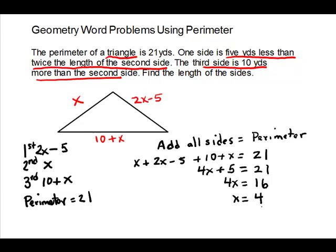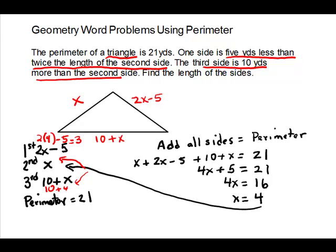Now we substitute back to get the other two sides. For the first side: 2 times 4 minus 5 equals 8 minus 5, which is 3. For the third side: 10 plus 4 gives us 14. So we have one side that is 3, one side that is 4, and one side that is 14. Quick check: 3 plus 4 plus 14 equals 21, which is exactly our perimeter.